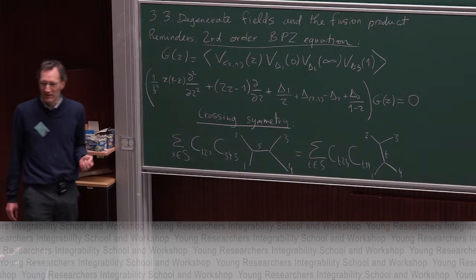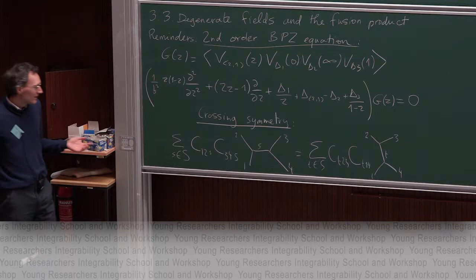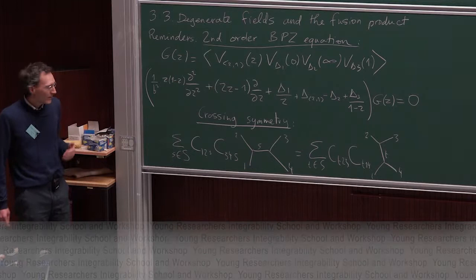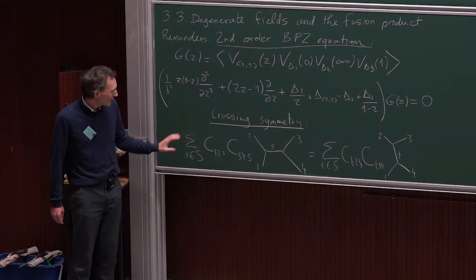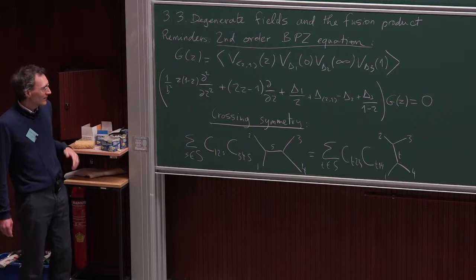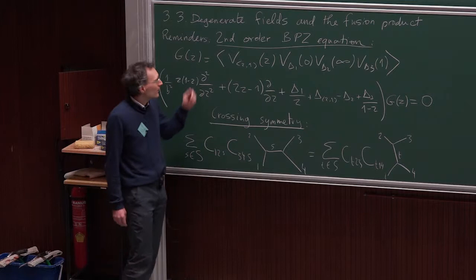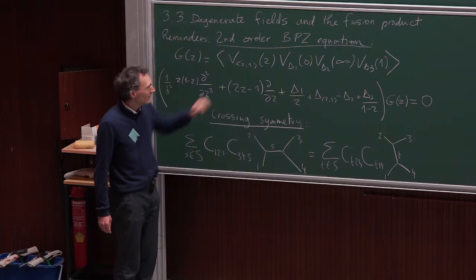So how do we solve this equation? It's a quadratic equation for the structure constants and it's quite non-trivial. Typically the sums on both sides can be infinite, making the equation rather difficult to solve. Things become simpler if for some reason the sums become finite, and now we will study a case when the sums become finite: the case of a four-point function with a degenerate field at level two, V₂₁(z).